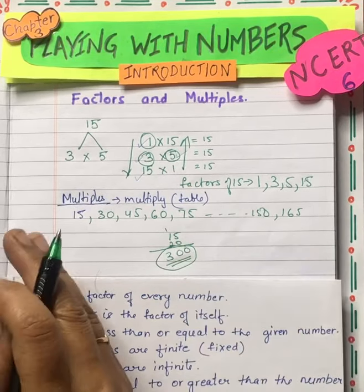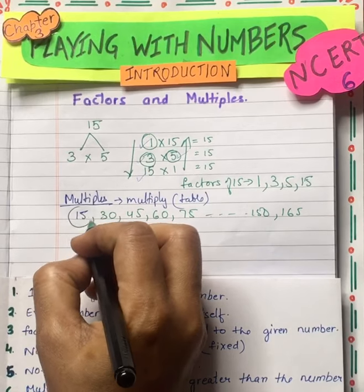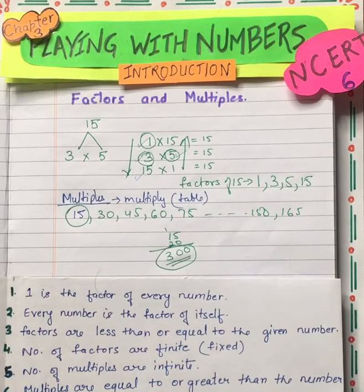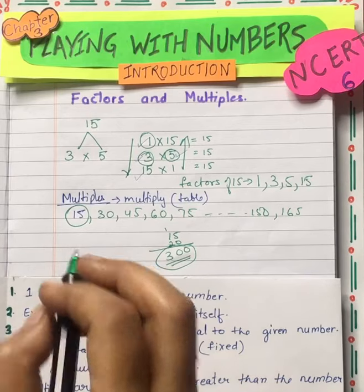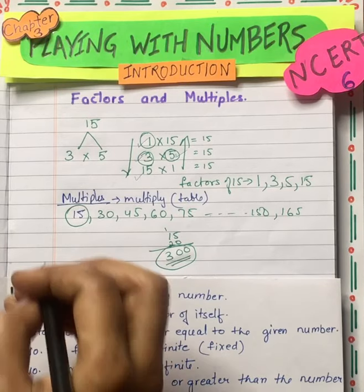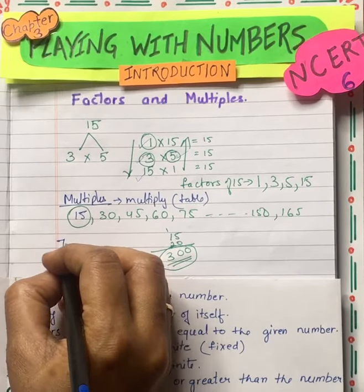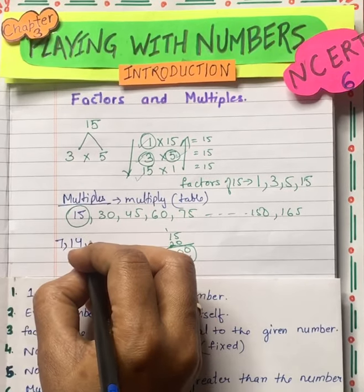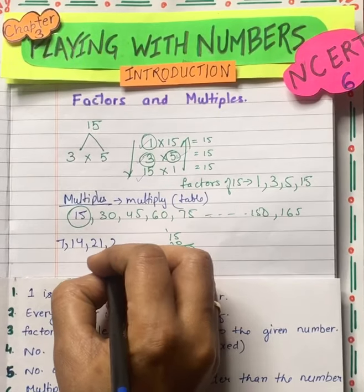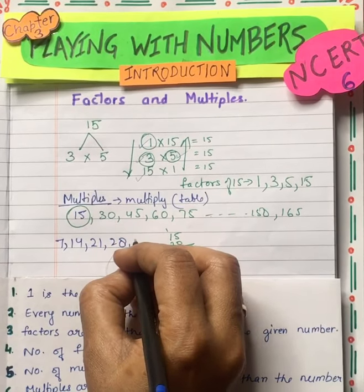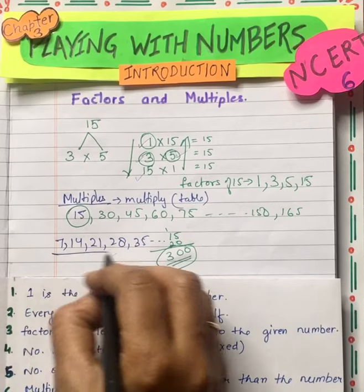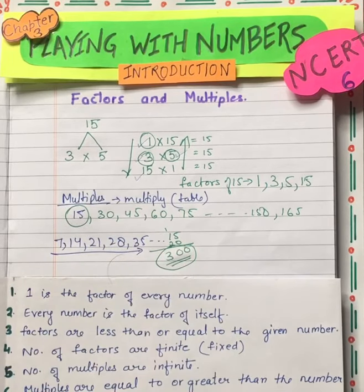So the numbers in the table are multiples. Let's take another example. If we take 7, what are the multiples of 7? You have 14, 21, 28, 35, and so on. These are the multiples of 7, and those were the multiples of 15. Is it clear?